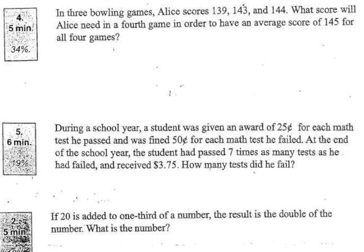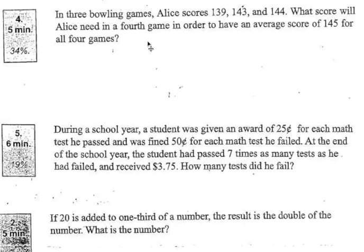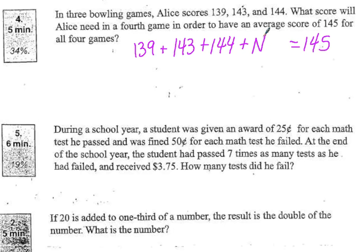So the way we can set this up is what we know is she already has 139, she already has 143, and she already has 144. We know that we want the average to be 145, and we know that she's going to do a fourth game. We don't know what she's going to bowl on this fourth game, so we can use a letter, or a variable, use the letter N, to represent that fourth game.